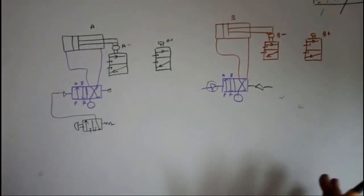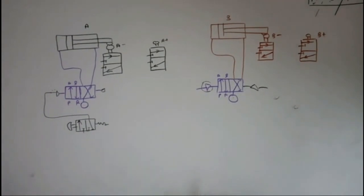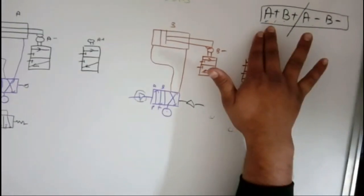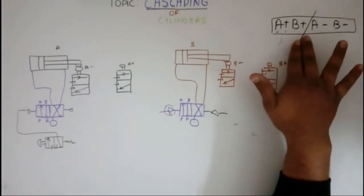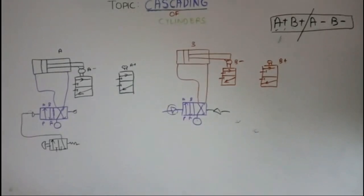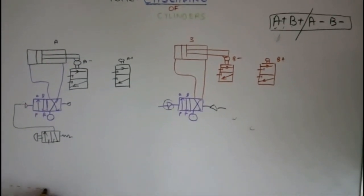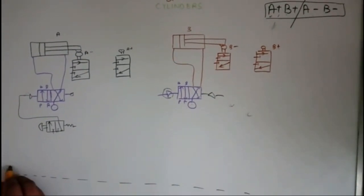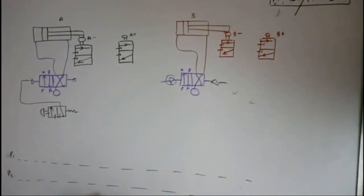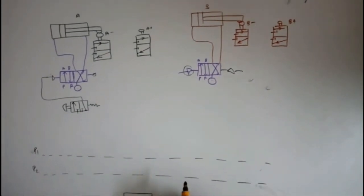We have made the basic structure of the cylinders. Now, how do we cascade? We need cylinder A to extend first, then B extends, then A retracts, then B retracts. Since we have two groups, we make two pressure lines: P1 and P2.